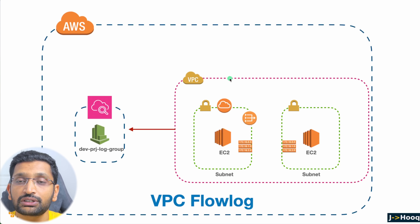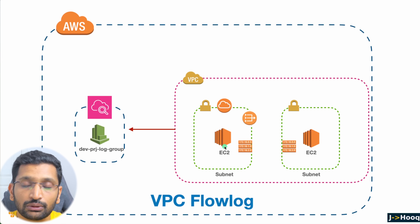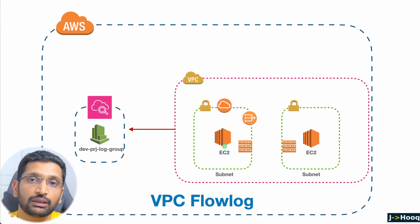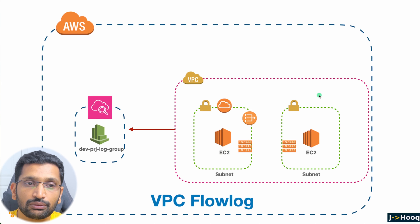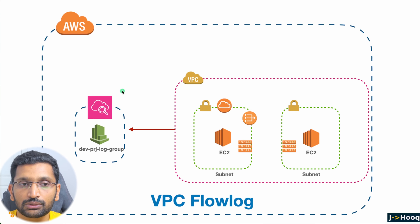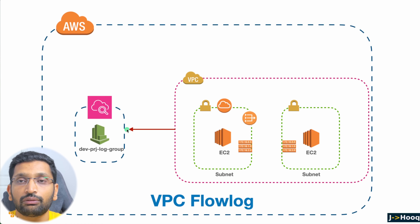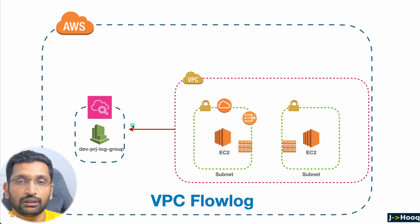Here is a quick glimpse of the fully functioning VPC where you can see there is a VPC, a couple of subnets, and in the subnets you have some resources — for example EC2 instances. These EC2 instances can be replaced with Lambda, ECS, Kubernetes cluster, or any other AWS services. On the right-hand side you will have CloudWatch along with our log group. We are going to capture all that traffic using our VPC flow log into our CloudWatch log group.